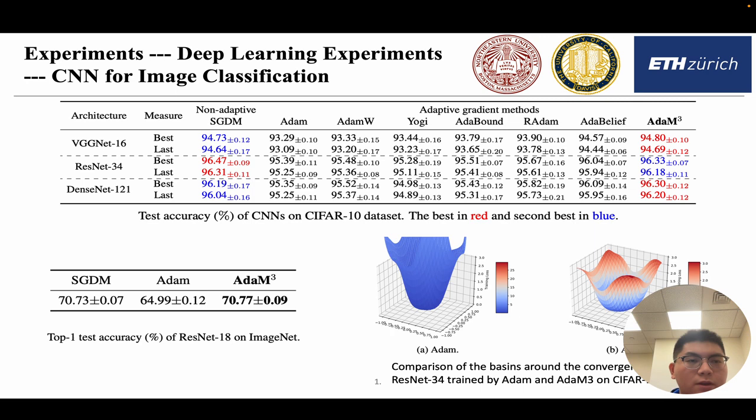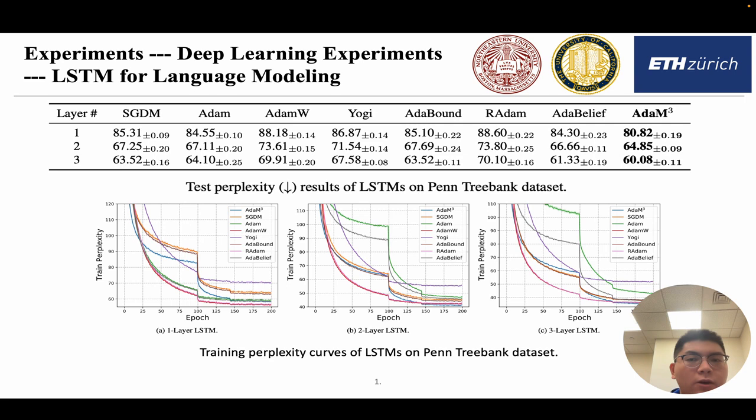We did experiments in image classification on CIFAR-10 dataset and the ImageNet dataset. We can see that our proposed AdaM3 is comparable to SGDM and far better than all the adaptive gradient methods. It also illustrates the shape of the loss curvature of Adam and AdaM3. We can see that after our modification, our loss curvature is more flat, which means that it converges to flatter minimum leading to better generalization.